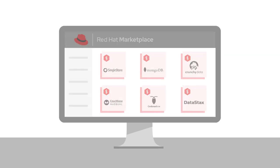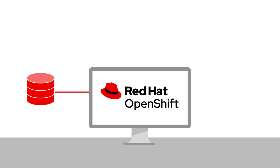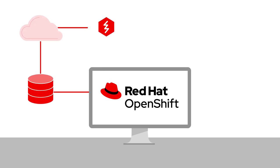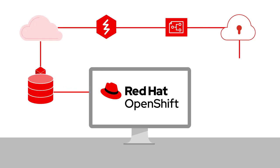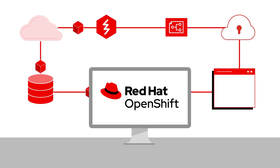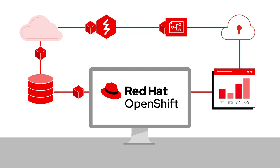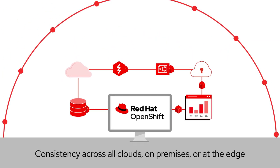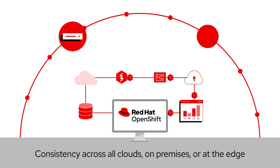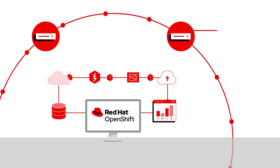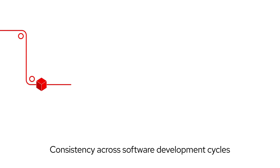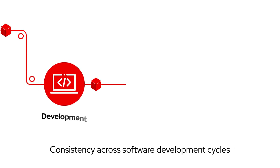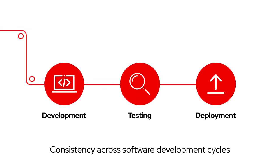With Red Hat OpenShift, you can deploy every component of a cloud-native application, including data workloads, on one platform consistently, across all clouds, on-premises, or at the edge — and across various phases of the agile software development life cycle, from development and testing to deployment.